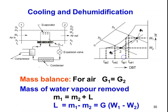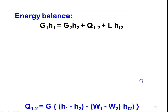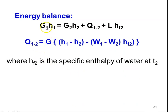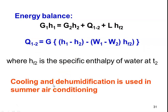For the mass balance: G1 = G2 for air; for water vapor, M1 = M2 + L, so water vapor removed L = M1 − M2 = G·(W1 − W2), which is the mass of air times the change in specific humidity. Writing the energy balance: G1·H1 = G2·H2 + Q₁₂ + L·HF2. Therefore Q₁₂ = G·(H1 − H2) − (W1 − W2)·HF, giving the amount of heat removed during cooling and dehumidification.